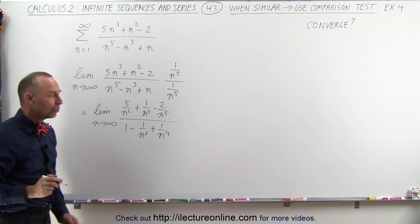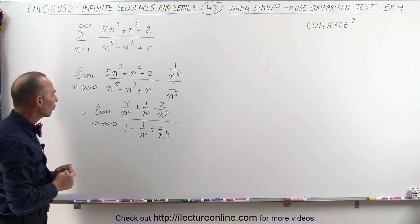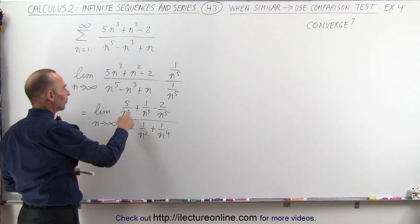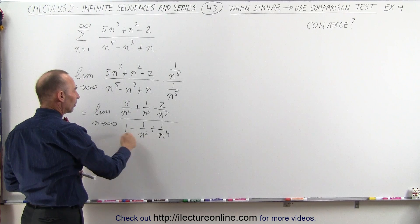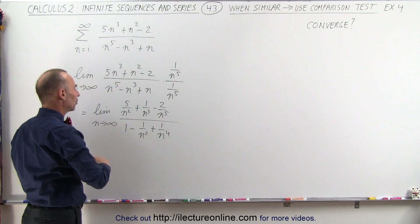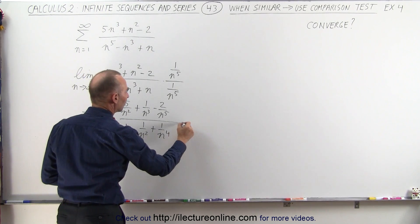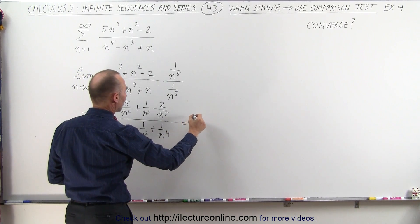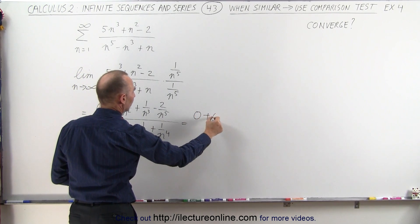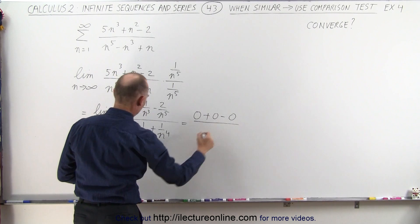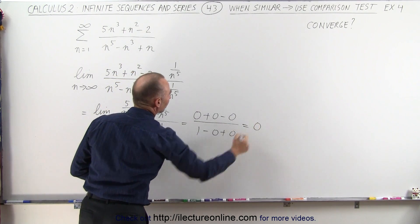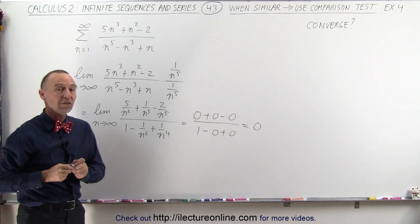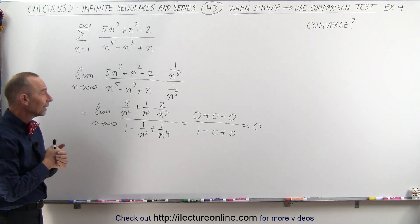Now we can allow n to go to infinity. As n goes to infinity, notice what happens. Every one of these terms that has an n in the denominator will go to 0. The only one that remains is this one, which becomes 1. So in the limit, the n-term as n goes to infinity becomes 0 plus 0 minus 0 divided by 1 minus 0 plus 0, which is simply equal to 0, which means eventually the terms go to 0 in the limit.